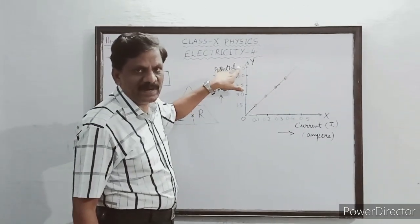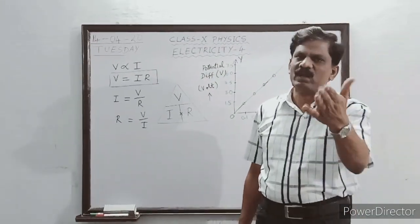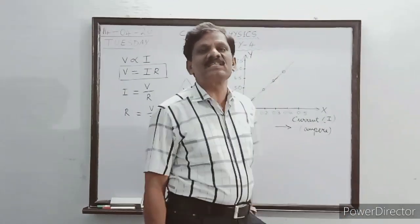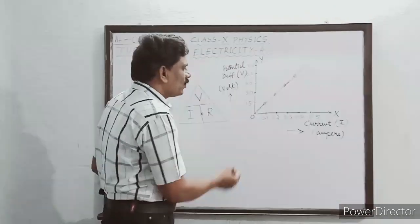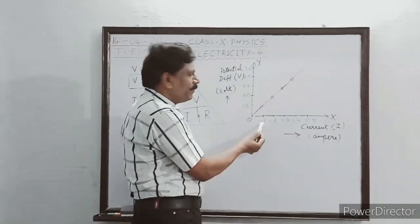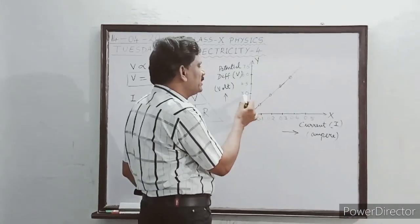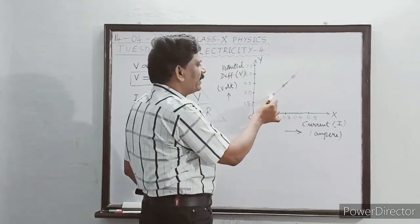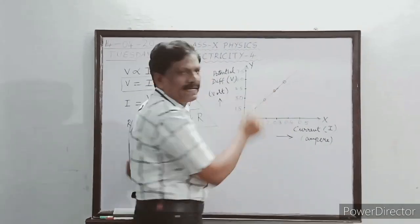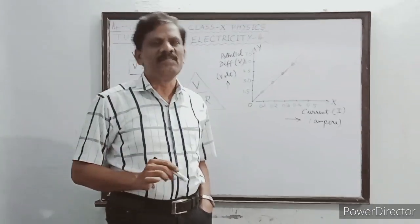From the tabular column, when one cell is connected, the potential difference is 1.5 volt and the current is 0.1 ampere. Corresponding to a current of 0.2 ampere, the potential difference is 3 volt. Similarly for 0.3 and 0.4 ampere, you locate the points on the graph. Take a scale and neatly join all the points — the graph is a straight line passing through the origin.